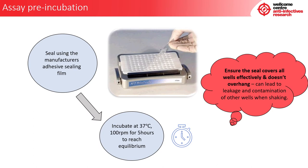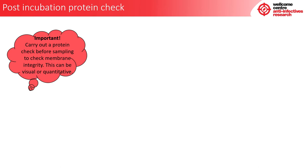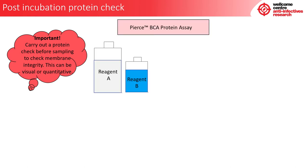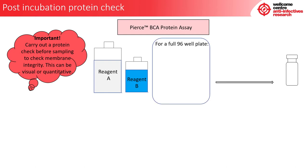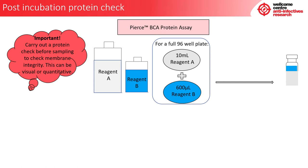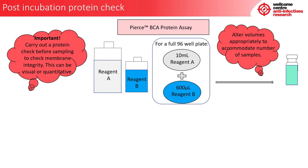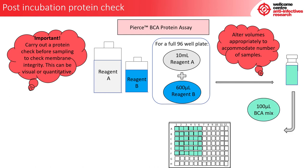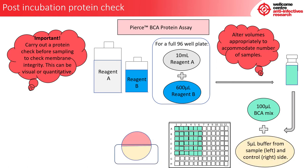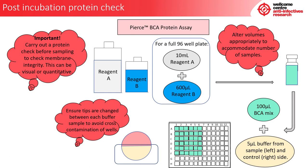Now incubate your dialysis block at 37 degrees Celsius, 100 rpm, for 5 hours to reach equilibrium. It is important to carry out a protein check prior to sampling to check the membrane integrity; this can be quantitative or visual. For a visual check using the Pierce BCA protein assay, which includes reagent A and reagent B: for a full 96-well plate, add 10 ml of reagent A and 600 microlitres of reagent B and vortex to turn green. Then into a fresh 96-well plate, add 100 microlitres of BCA mix and 5 microlitres of buffer from the sample side and the control side of the dialysis block, changing tips between each sample to avoid cross-contamination. Leave on the bench for 15 minutes.